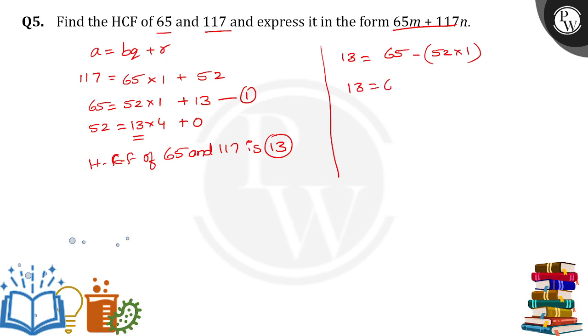Now 13 is equal to 65 minus 52 into 1, which means 52 only. So that is step number 2. We can write 52 into 1 as 117 minus 65 into 1.